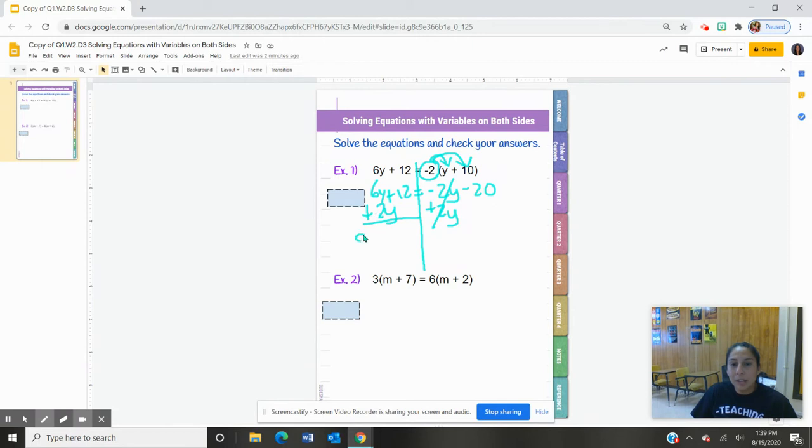So 6y and 2y make 8y, and then I have plus 12. So I'm just going to bring down that plus 12. And now notice those y's are gone over here, so all I'm left with is a -20. So I'm going to write here -20.